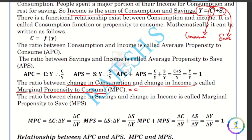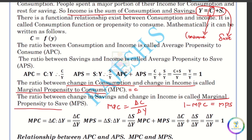We will denote MPC. MPC is equal to ΔC by ΔY, where delta C means change in consumption and delta Y means change in income. Then MPC plus MPS equals 1, where MPS is the Marginal Propensity to Save.